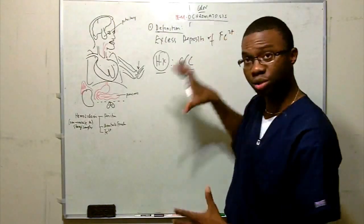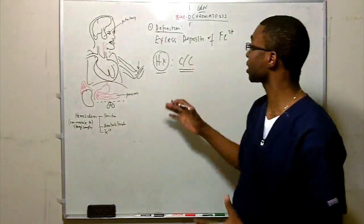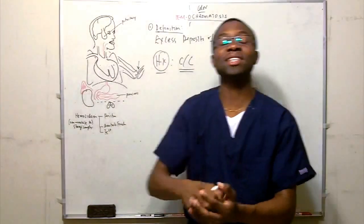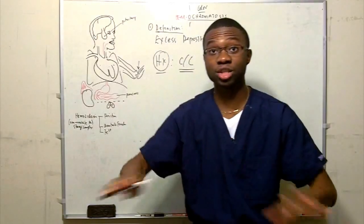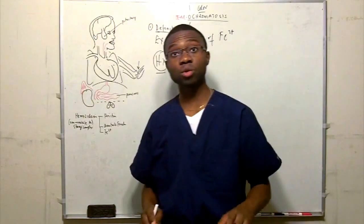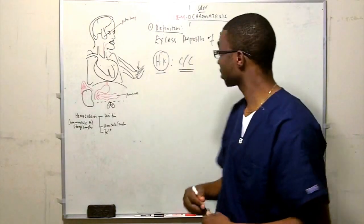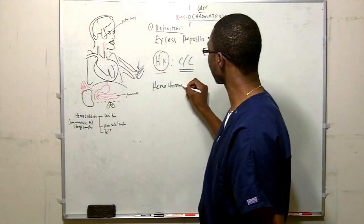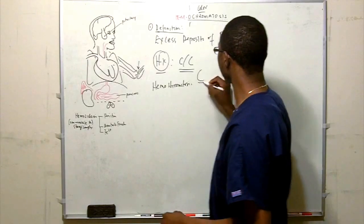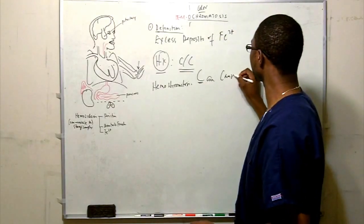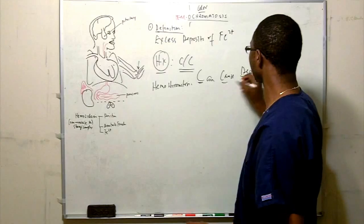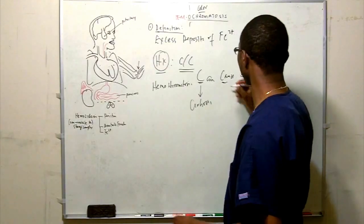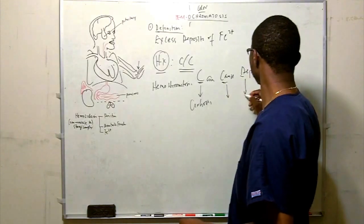Now that we know the pathophysiology — the mutation in the HFE gene causes excessive reabsorption of iron into the body — it's the deposition of this iron that's going to give them all their symptoms. Hemochromatosis can cause deposit. Let's use that as our mnemonic: hemochromatosis can cause deposit. The C stands for cirrhosis, and the deposits are going to be in every part of their body.